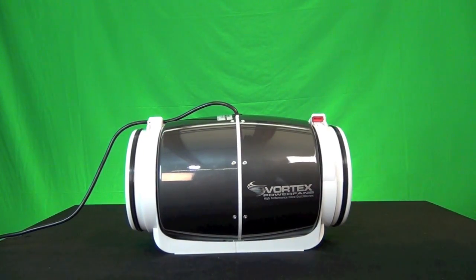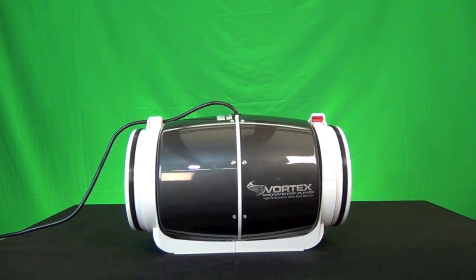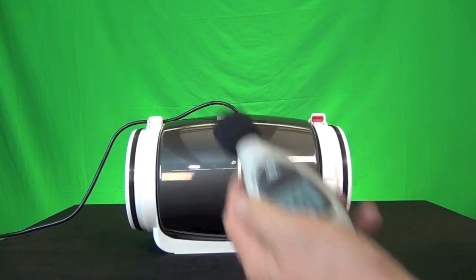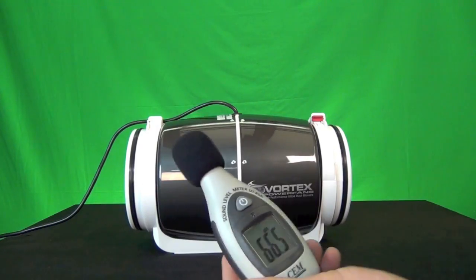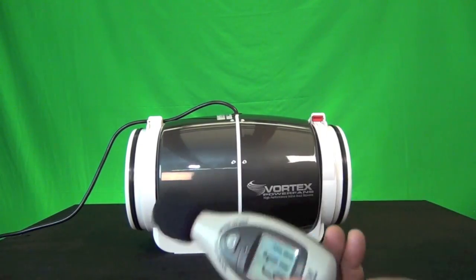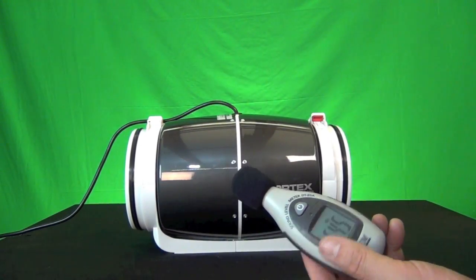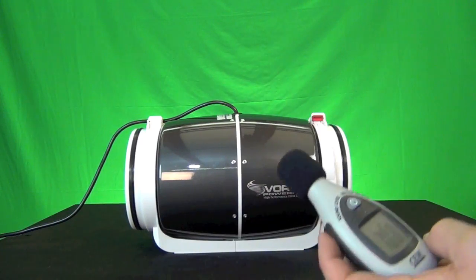So let's go ahead and run the Vortex fan, then take a measurement about 12 inches from the fan with our dB meter. This is a really simple dB meter, but it'll give us a good idea of difference in comparison to a regular inline fan, which we'll also test, and we'll get an idea of its sound output.